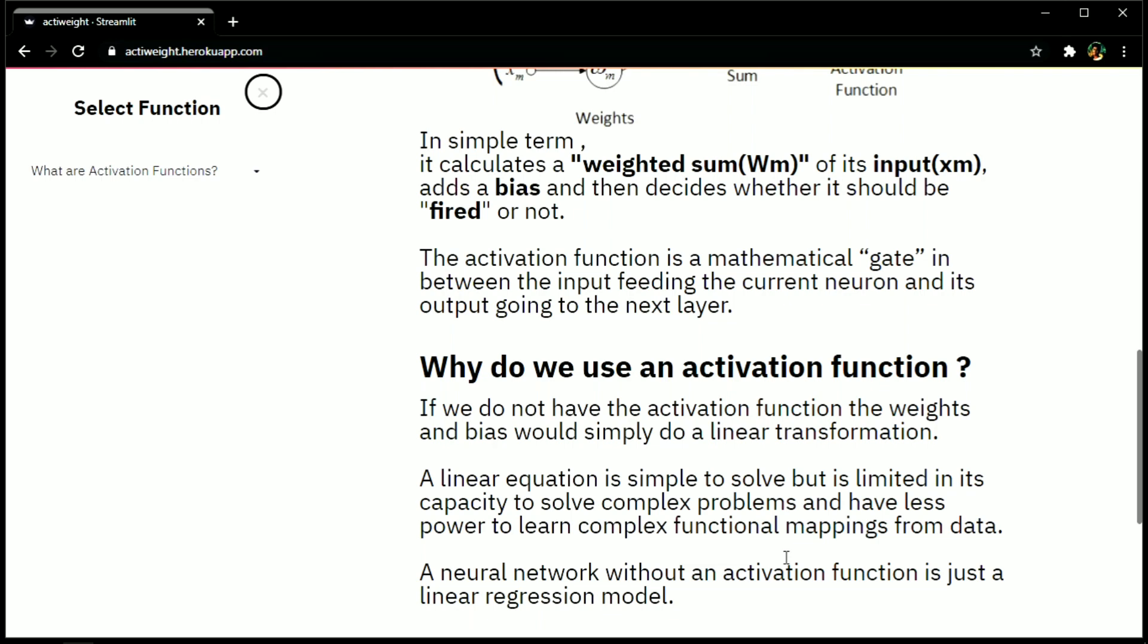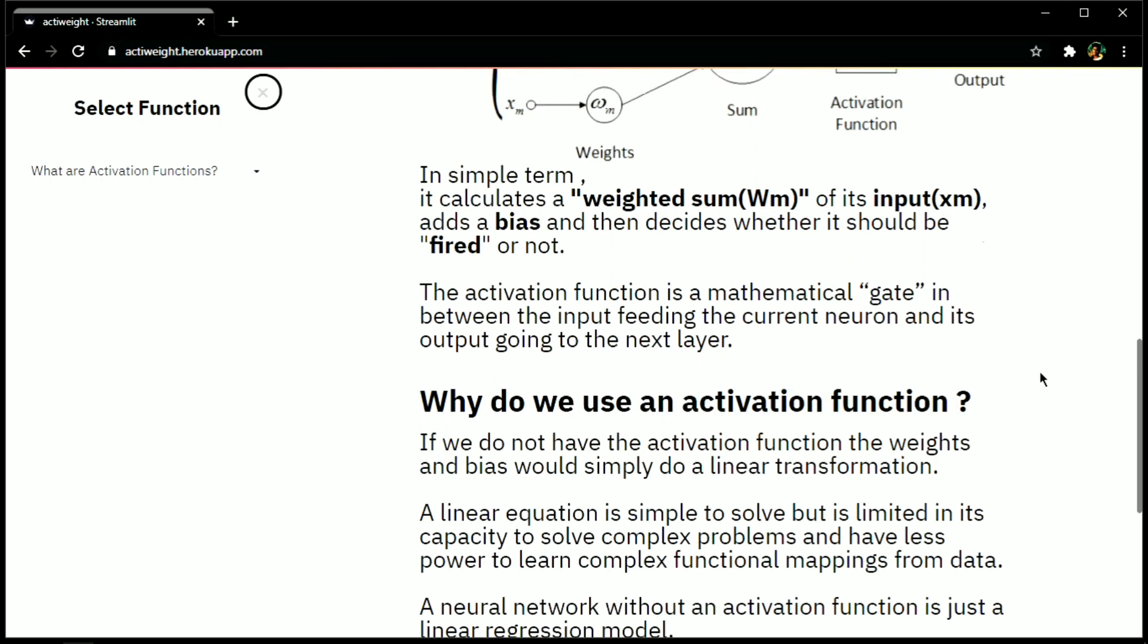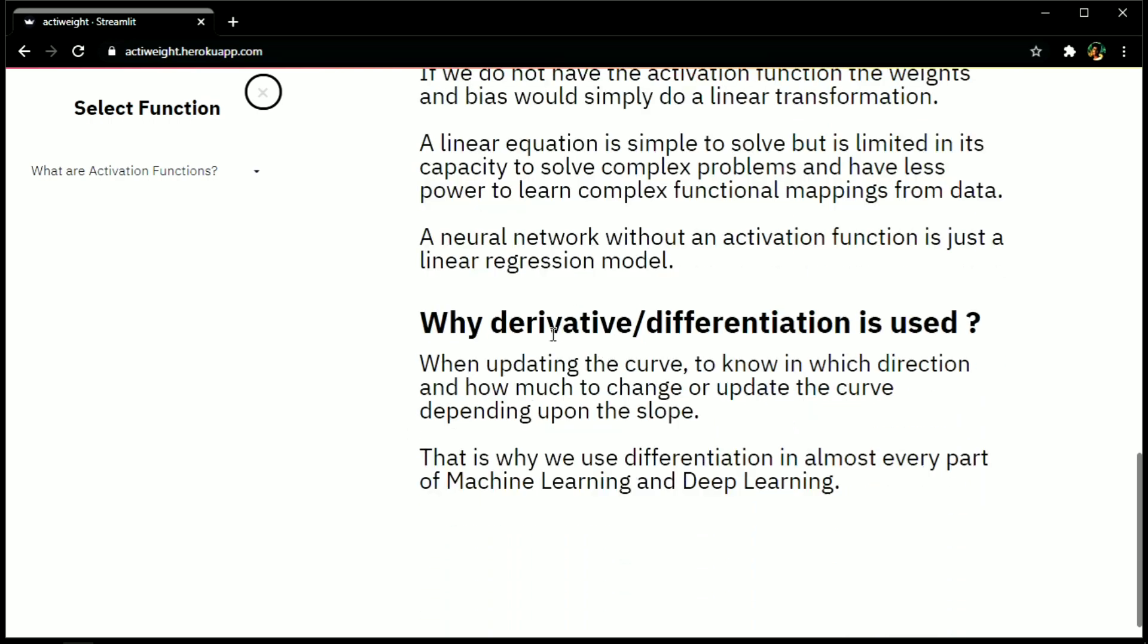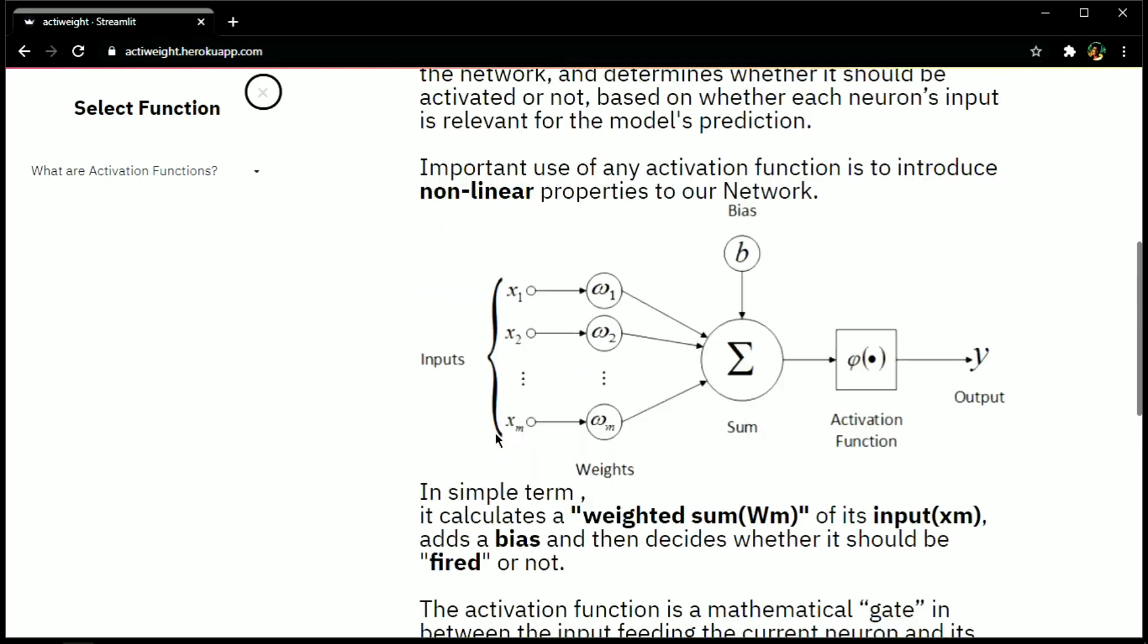Okay that's cool but why do we use an activation function? If we don't have the activation function, the weights and bias would simply do a linear transformation and that neural network becomes a linear regression model. Derivatives of activation functions are very important in backpropagation. When updating the curve of loss function, activation functions help the gradient descent algorithm to converge to their local minima.